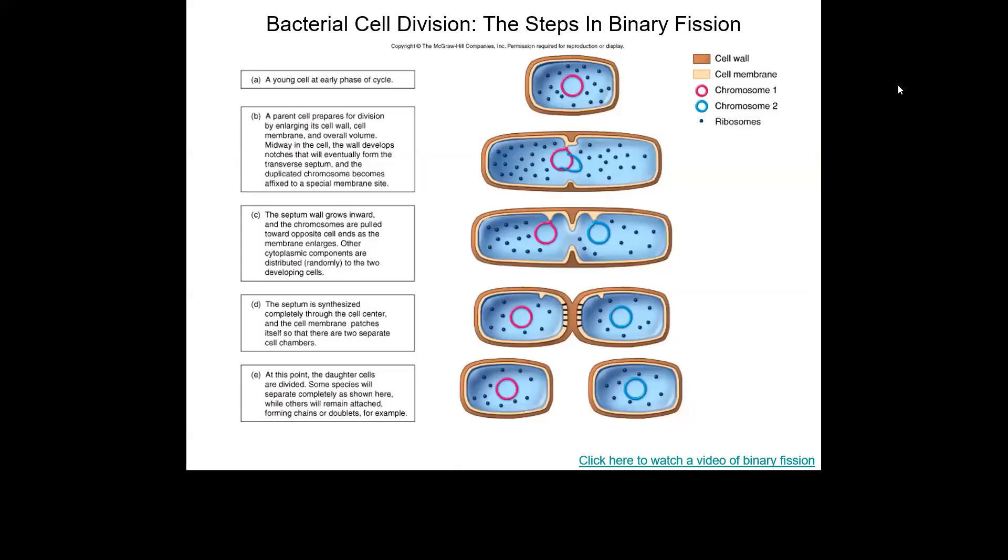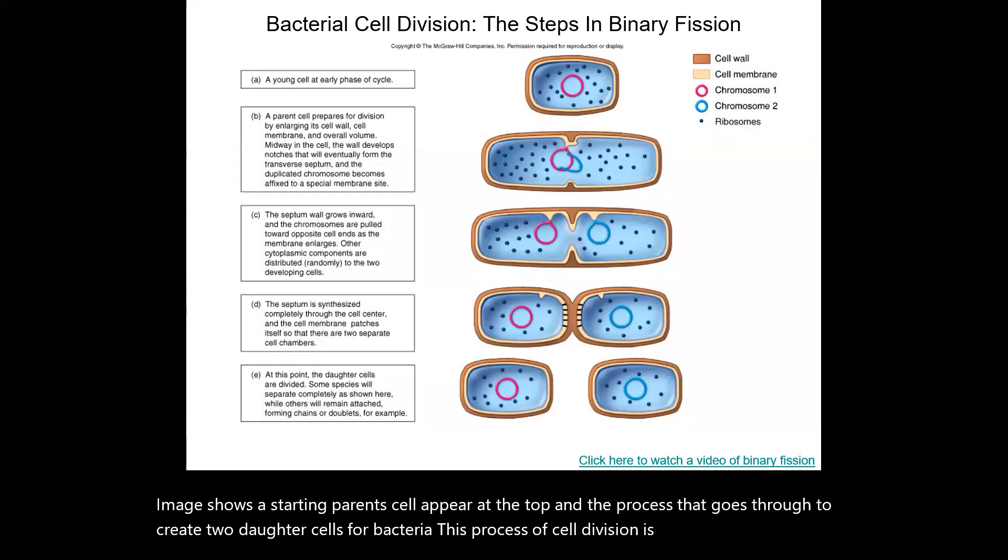This video is going to focus on cell division for bacterial species and have you do some practice problems related to cell division and generation time. So this image shows a starting parent cell at the top and the process it goes through to create two daughter cells. For bacteria, this process of cell division is called binary fission.